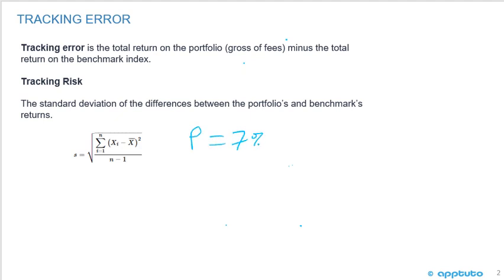...and the benchmark is the S&P 500. So it's an index fund meant to track or replicate the index S&P 500, and the S&P 500 for that same period had a return of 6.95%. So what would be the tracking error? Let's just bring up the calculator.